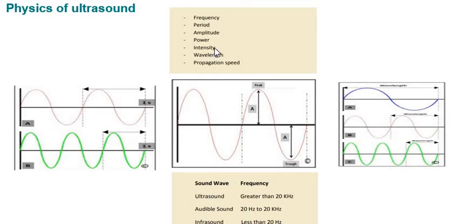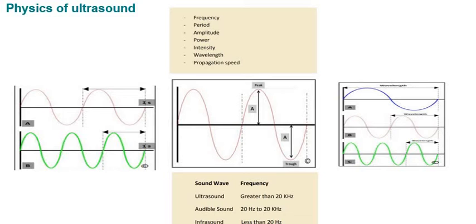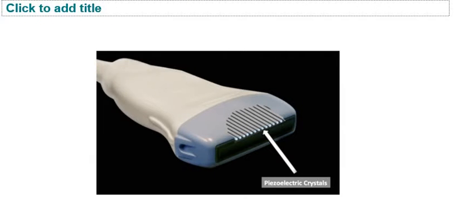Regarding intensity and power — when the ultrasound beam is focused at a particular point, it generates a high-intensity beam. This high-intensity beam can generate higher temperature in that area, which is why this principle is used in medical science to generate heat waves using the ultrasound machine.